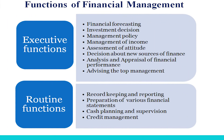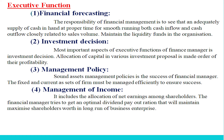Next we see the functions of financial management. Functions of the financial manager can be divided into two: executive functions and routine functions. In executive functions, first we see financial forecasting. The prime responsibility of financial management is to see that an adequate supply of cash is on hand at the proper time for the smooth flow of the firm's activities. Since both cash inflow and cash outflow are closely related to the volume of sales, it requires financial forecasting. Thus, the estimation of inflow and outflow of cash is necessary to maintain the liquidity of funds.